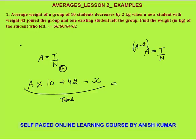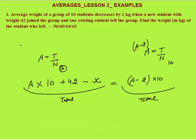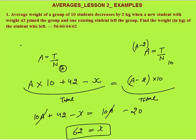The number of students is still the same — 10 — since one person came and one person left. So total weight is now (a − 2) × 10. Making this simple equation: 10a + 42 − x = 10a − 20. The 10a terms cancel, and you get x = 62. That is option number 4. So 62 kg is the final answer. You can solve such questions in less than a minute in your aptitude test.